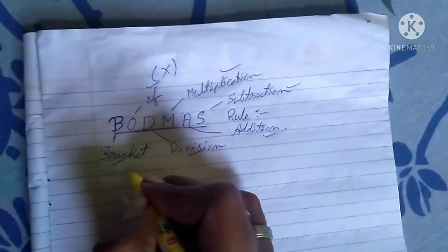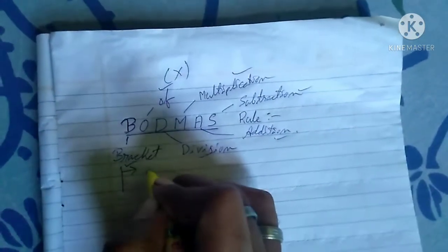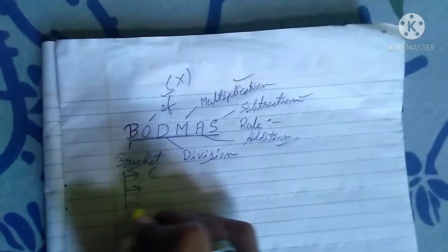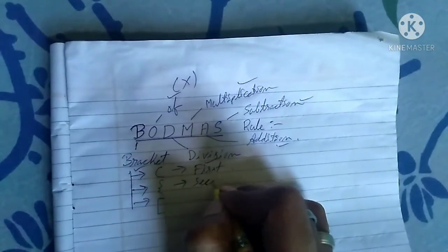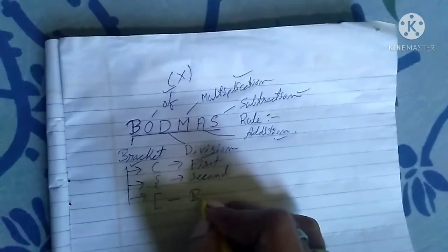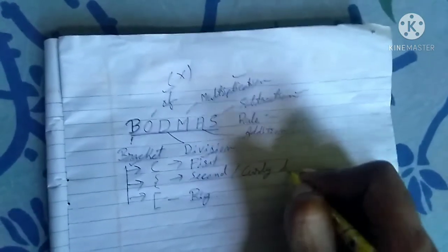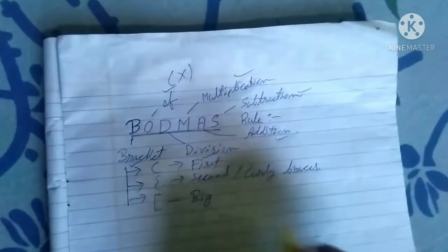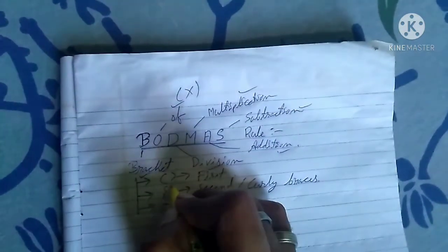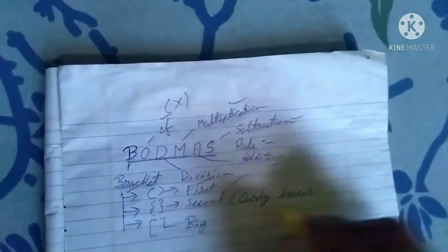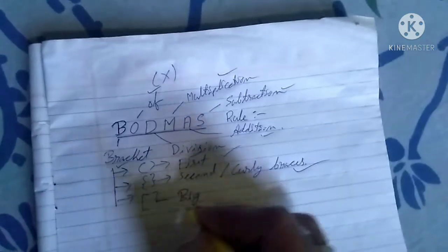Before starting the examples, I want to tell you that we have three types of brackets. This first one is called the first bracket, the second is called the curly braces, and the third is called the big bracket. While solving, we solve the first bracket first, then the curly bracket, and lastly the big bracket.